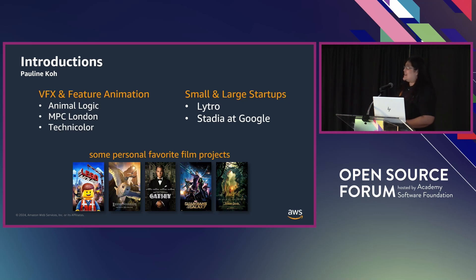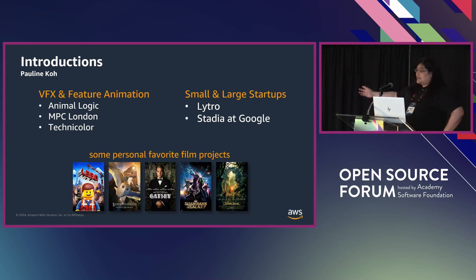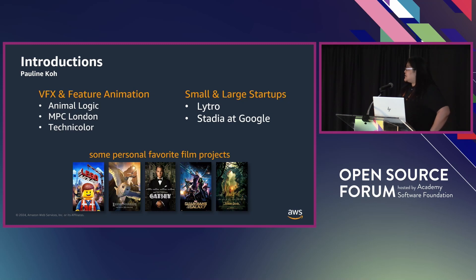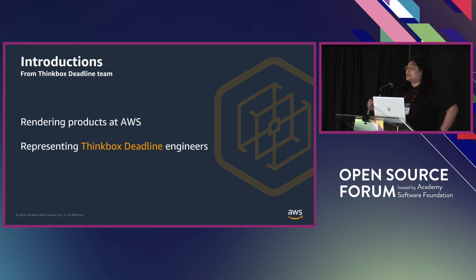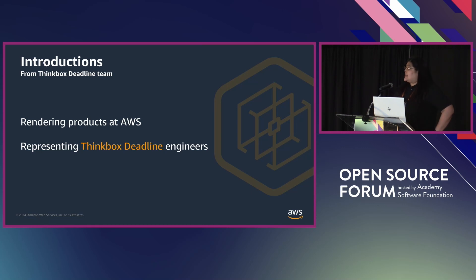In the past, I've worked at studios on visual effects and feature animation projects. Some highlights I'll call out are Animalogic and MPC London, Technicolor, some small startups such as Lytro, some larger startups such as Google. And these days I am a senior technical product manager at AWS focusing on rendering products, here on behalf of the AWS ThinkBox Deadline team, who have been delivering render farm technology since 2004.